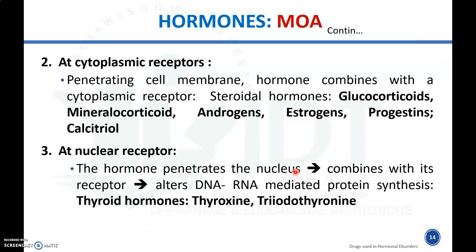The second mechanism is acting at the cytoplasmic receptor — the hormone penetrates the cell membrane, combines with the cytoplasmic receptor, and stimulates the hormonal effect. Examples include glucocorticoids, mineralocorticoids, androgens, estrogen, progesterone, and calcitriol. The third mechanism is acting through nuclear receptors — the hormone penetrates the nucleus, combines with the receptor, and alters RNA/DNA-mediated protein synthesis, as in the case of thyroxine and triiodothyronine.